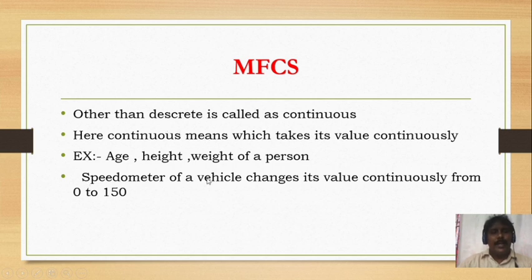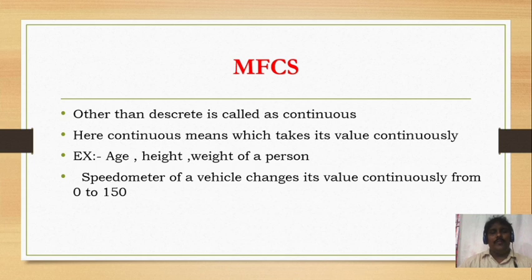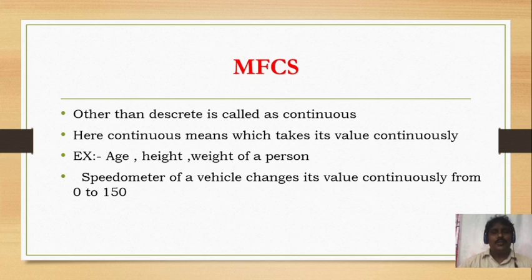Another example is the speedometer of a vehicle. The speedometer changes its value continuously from 0 to 150 — it has a pointer. If we stop the vehicle, the pointer shows 0; a little speed shows 30; high speed shows 60. It does not stay at a particular value but changes continuously from place to place. So continuous means which changes its value continuously, while discrete is the study of particular values.